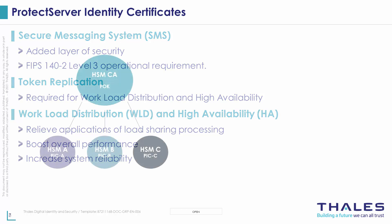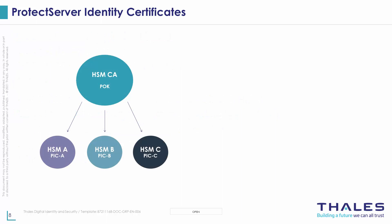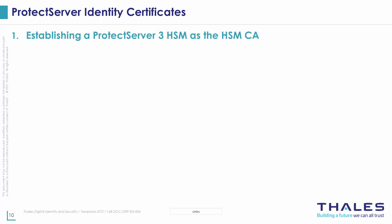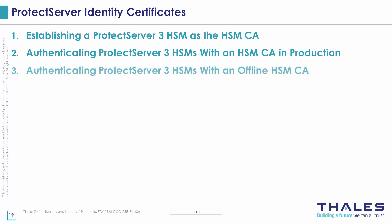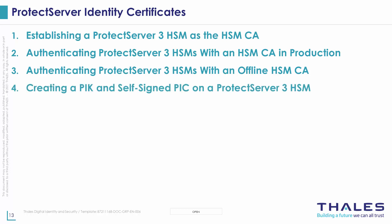This PIC can be signed by the Protect Server owner key with a Protect Server 3 HSM Certificate Authority that is authenticating all of the HSMs in your deployment, or it can be self-signed by the Protect Server's own identity key. This video will first demonstrate how to establish a Protect Server 3 HSM as the Certificate Authority with owner key and owner certificate, and then show you how to authenticate the remaining HSMs in your deployment when the HSM Certificate Authority is in production and when it's offline.